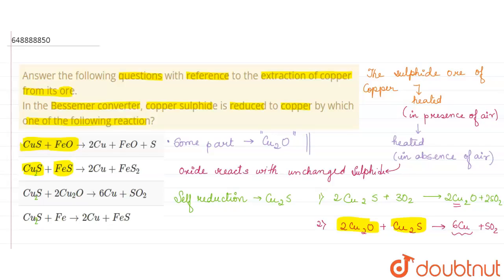Here we have Cu2S and then plus Cu2O gives 6Cu and SO2 so this will be the only correct one because rest everywhere Cu2S is reacting with Fe but that is not correct. So the three options are wrong and the third option is the only correct one. Hope this answer helps you.